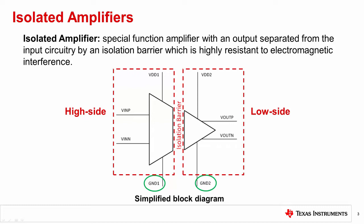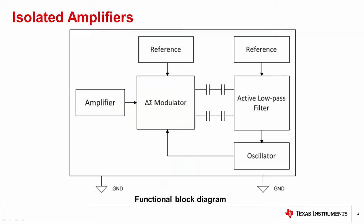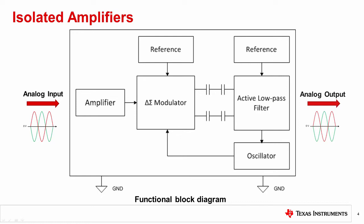Let's take a closer look at the functional block diagram of an isolated amplifier. Just like traditional non-isolated amplifiers, isolated amplifiers have an analog signal on the input and an analog signal on the output. The input stage of an isolated amplifier consists of either a fully differential or single-ended input that drives a delta sigma modulator. The gain of the amplifier is fixed and set by internal precision resistors.